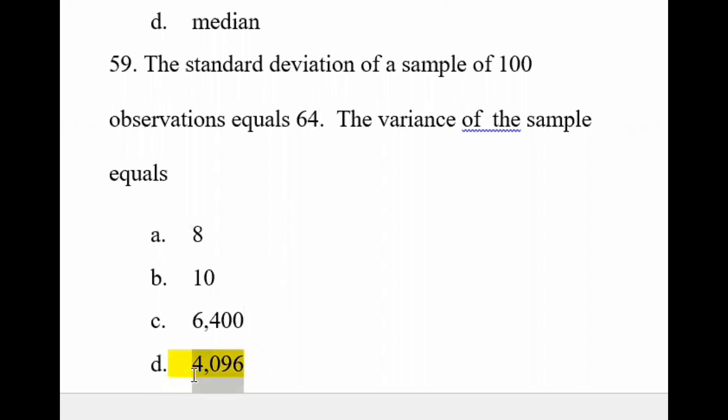Taking the square root of 64 gives the standard deviation. So the variance here is 4096, and its square root gives the standard deviation value.